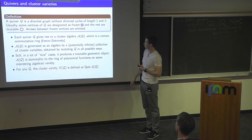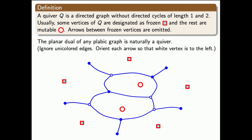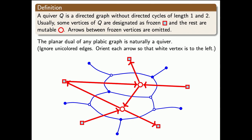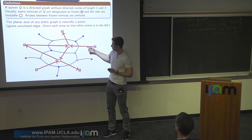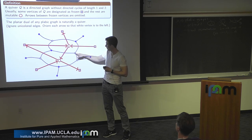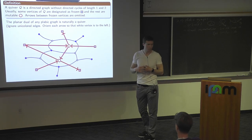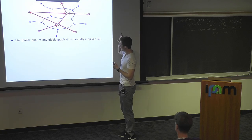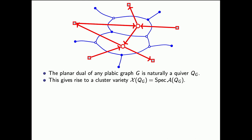What do I mean by nice quivers? Let me look at plebik graph quivers. If I start with a plebik graph, its planar dual was previously a triangulation with black and white triangles. Now the planar dual is going to be a directed graph where I ignore arrows between frozen vertices and ignore unicolored edges. Otherwise, I orient every arrow so that the white vertex is on the left and the black vertex is on the right. So I get a quiver for any plebik graph, and therefore, for any plebik graph I get an algebraic variety.